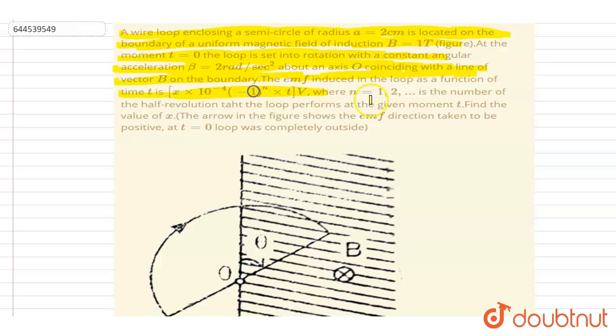The EMF induced is a function of time where n equals to one, two, three, four, the number of half revolutions that the loop performs at a given time. Find the value of x.